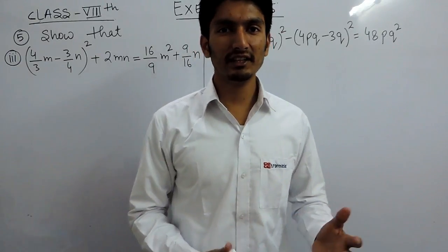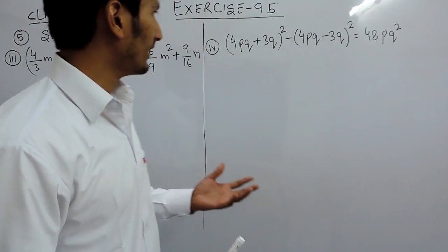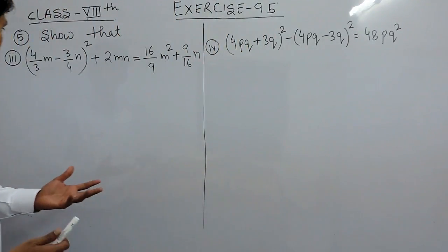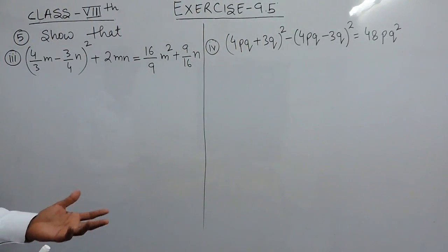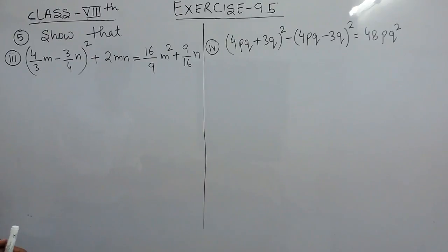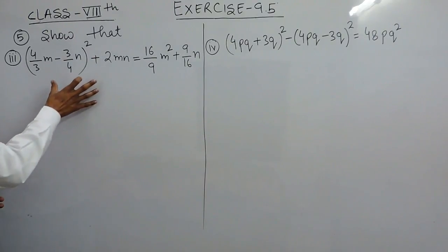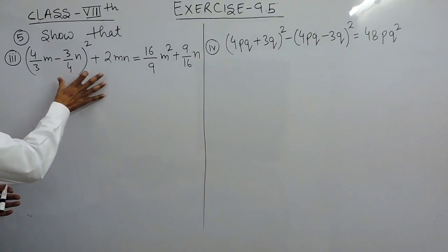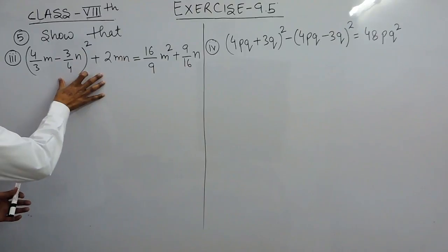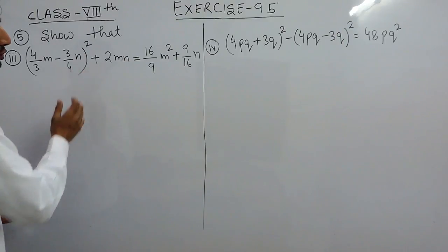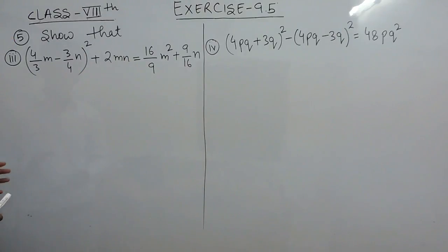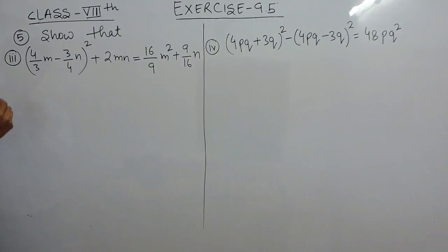Hello everyone. In this video we are going to solve part 3rd and part 4th of question number 5. You have to show that — means you have to prove that the right hand side is equal to the left hand side. To solve this, we have to use certain identities.